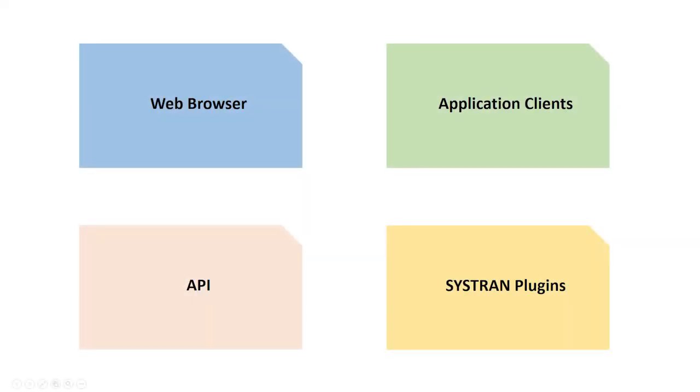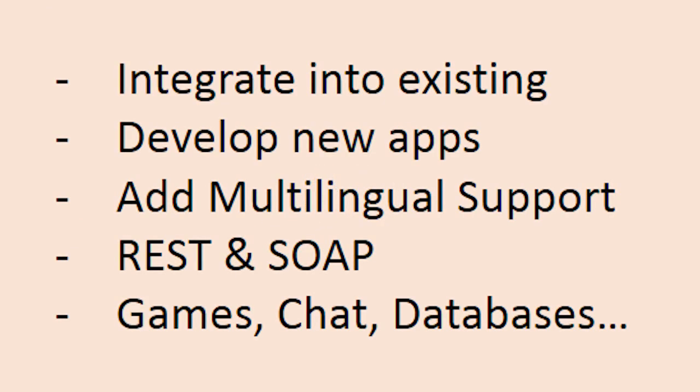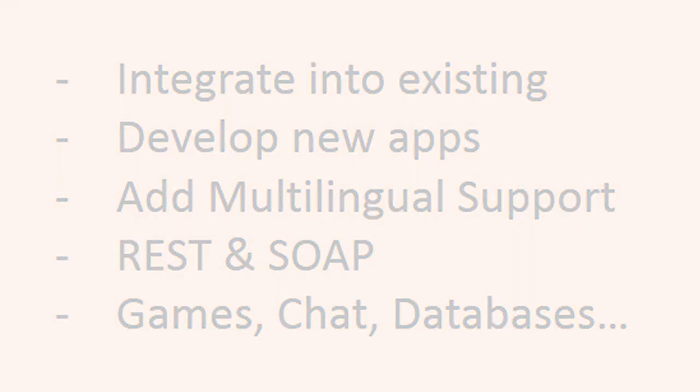For the third category, you can also make use of several API solutions, such as REST or SOAP, to integrate or add machine translation to your own application. This may require a special version of the Enterprise Server license, but when you have it, this opens many new possibilities for how and where you can offer translation.